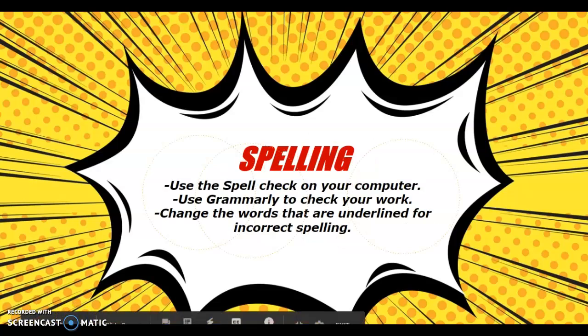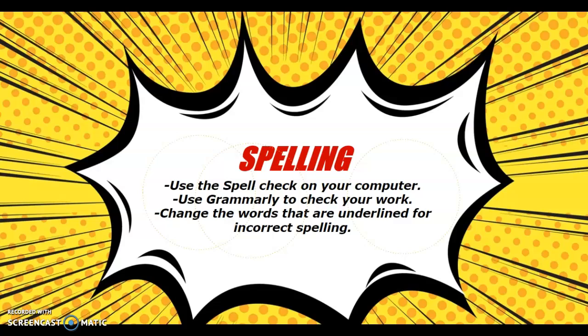Spelling is important. Your computer will tell you what words you have spelled wrong. You could also use Grammarly, which checks your work not only for spelling but for grammar errors as well. Change the words that are underlined or flagged as incorrect. Hit pause, go back through your paper right now, and make sure you have done that.